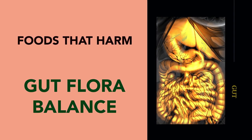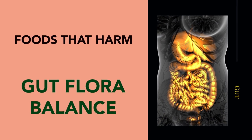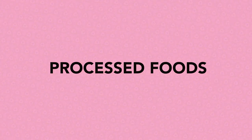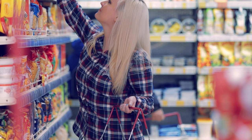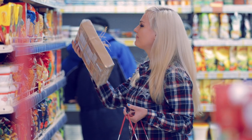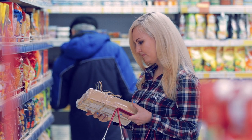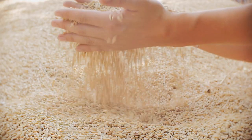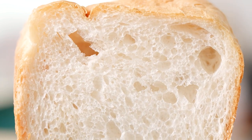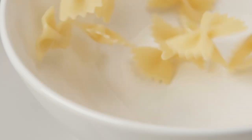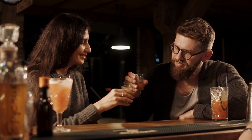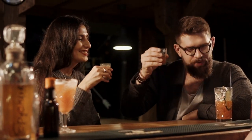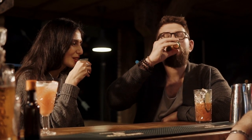Foods that harm gut flora balance. Many of the foods we eat on a regular basis can harm this delicate balance, leading to a whole host of health problems. Processed and pre-packaged foods contain high levels of added sugars, salt, and unhealthy fats, which can lead to an imbalance in gut bacteria, and often contain artificial ingredients and preservatives that can damage the gut flora. Refined grains — such as white bread and pasta — are stripped of their fiber content, making them harder for gut bacteria to break down, which can lead to an overgrowth of bad bacteria. Excessive consumption of alcohol can lead to the death of beneficial bacteria in the gut, resulting in an overgrowth of pathogenic bacteria.